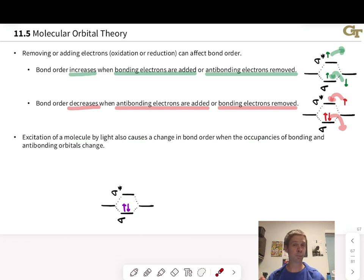If this molecule absorbs a photon whose energy is equivalent to the gap between the sigma and sigma star orbitals, what will happen is promotion of one of the electrons in the sigma orbital into the higher energy sigma star orbital, leading to an occupancy picture that looks like this now.